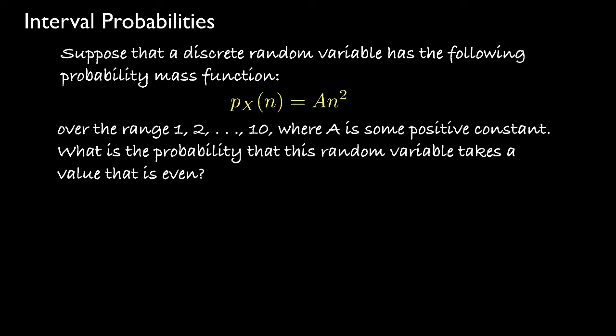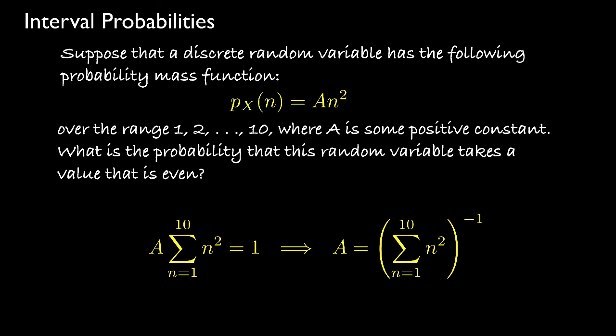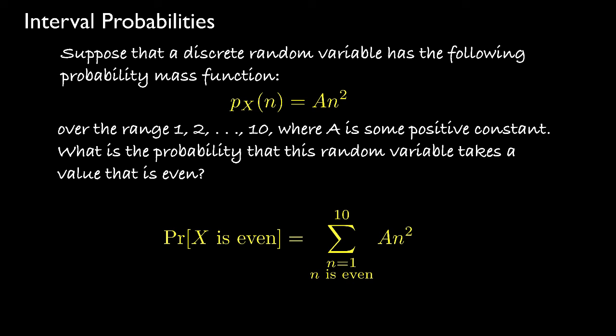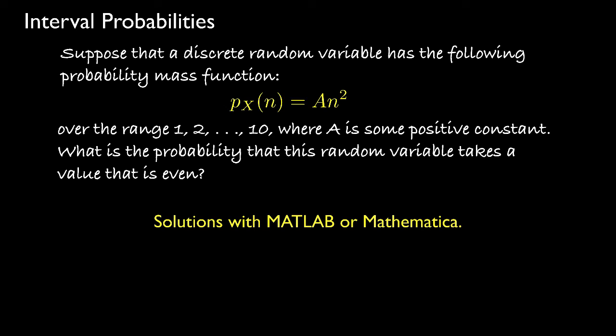For another example, let's determine the probability that a discrete random variable takes an even value, when the random variable has a probability mass function equal to a times n squared over the range of integers from 1 to 10. Because the constant a is not specified, we determine its value by requiring the probability mass function to sum to 1. Once we have a, we evaluate the probability by summing the PMF over the even integers in its range.